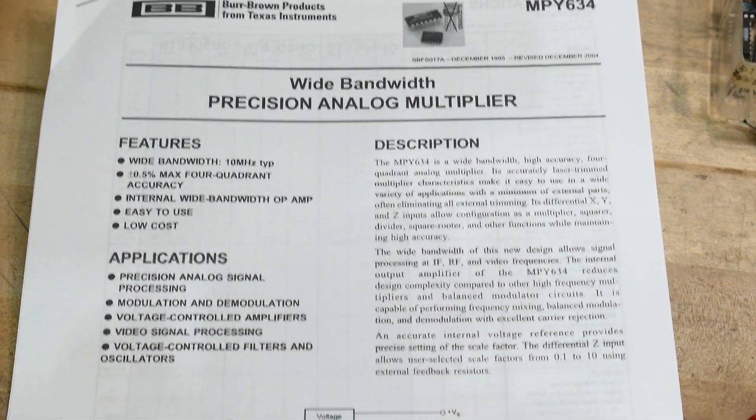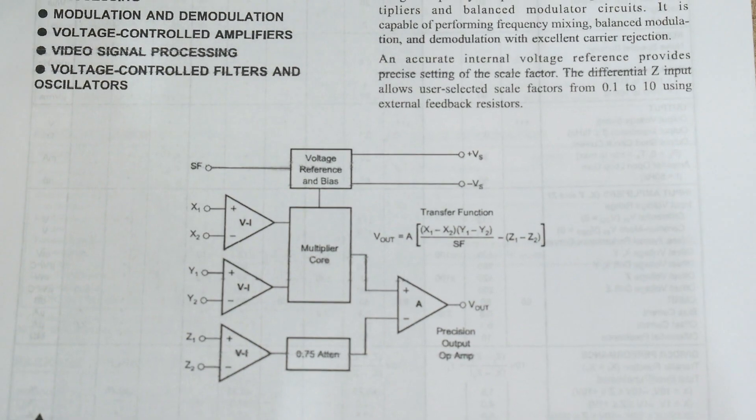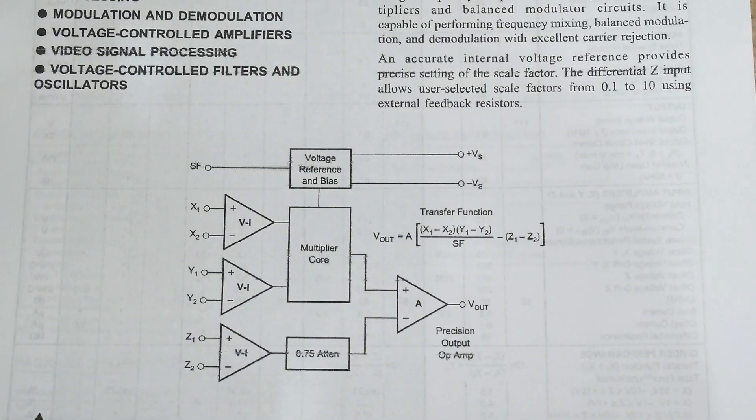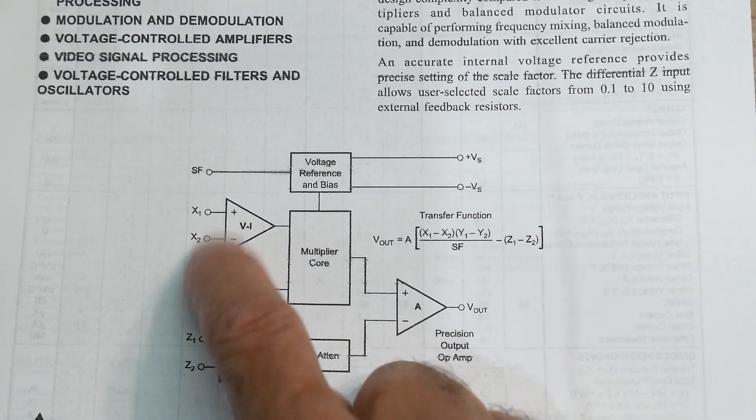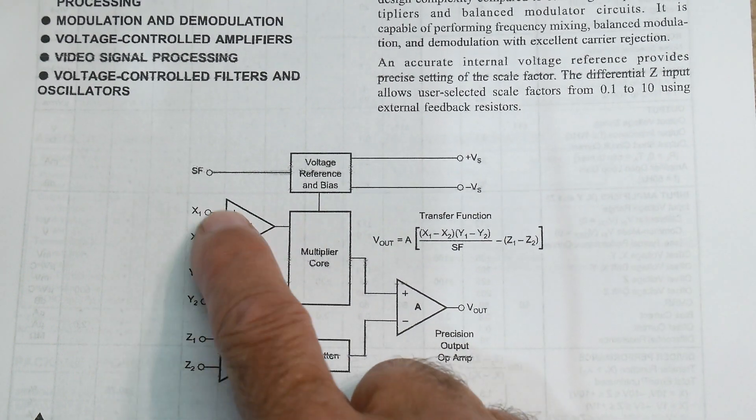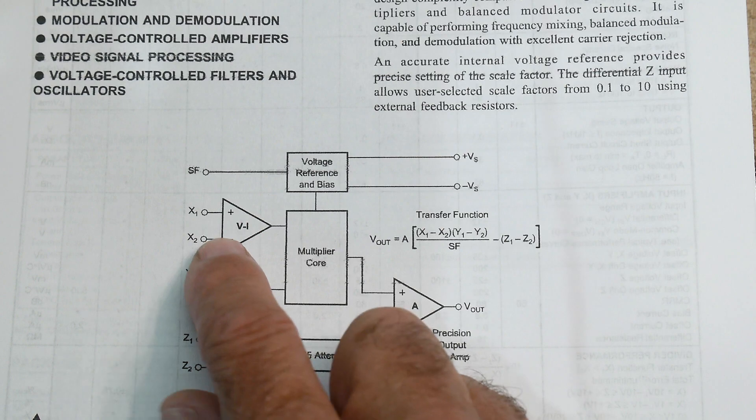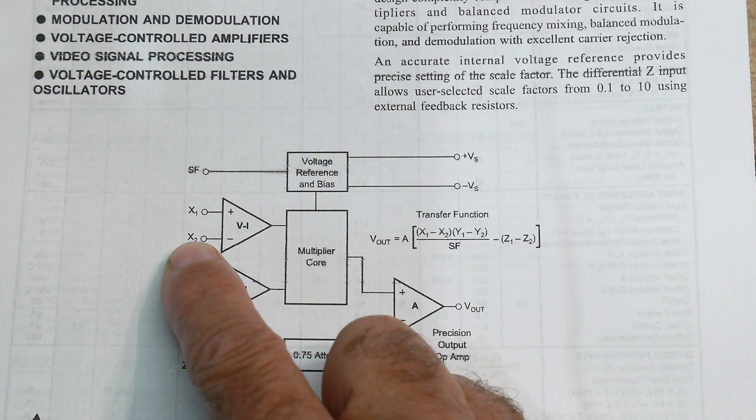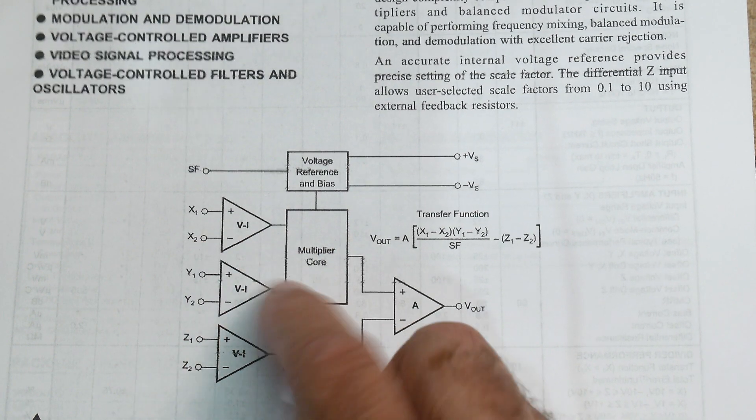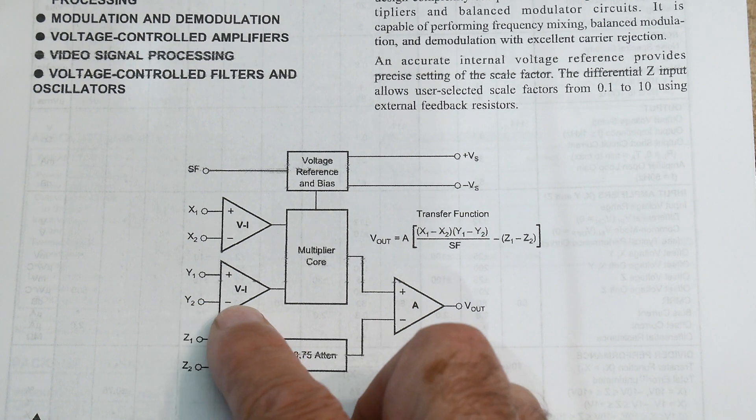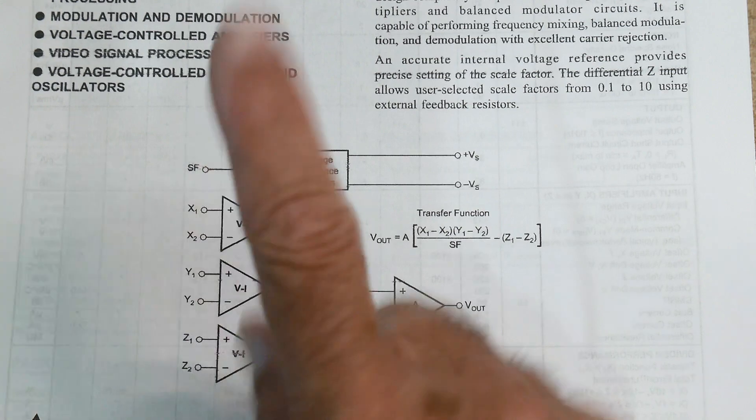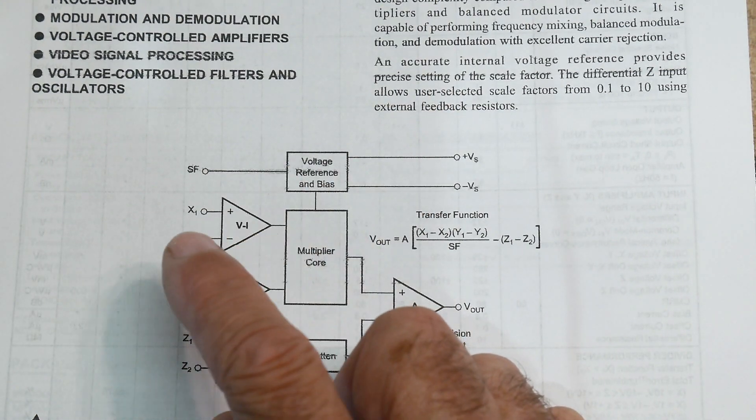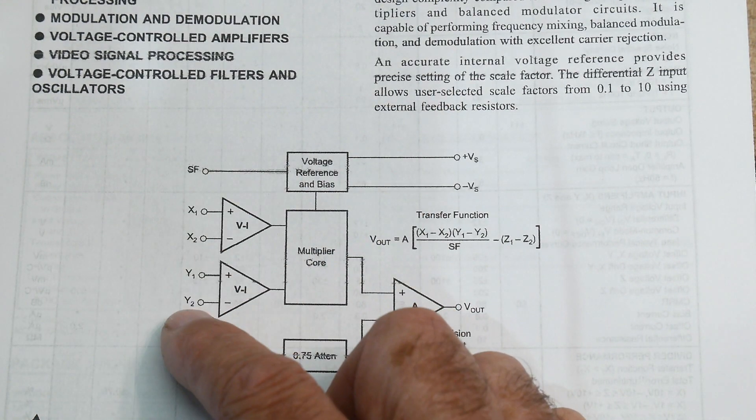Now the circuit looks like this. There's three differential inputs. So this is actually a subtraction too. So it's X1 minus X2 goes into the multiplier. Y1 minus Y2 goes in the multiplier. So it's actually X1 minus X2 times quantity Y1 minus Y2.